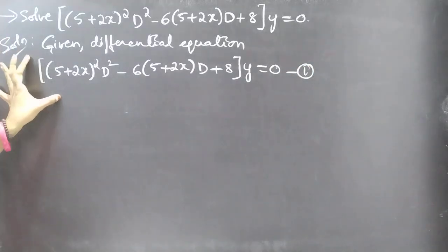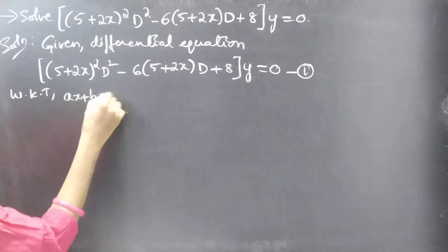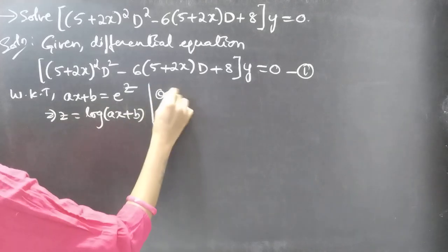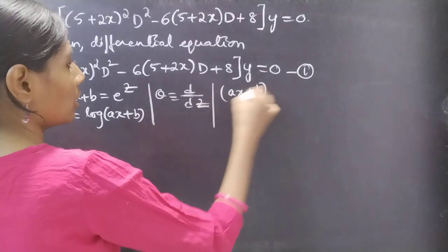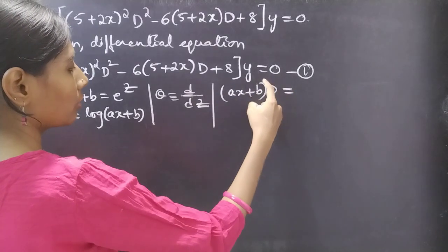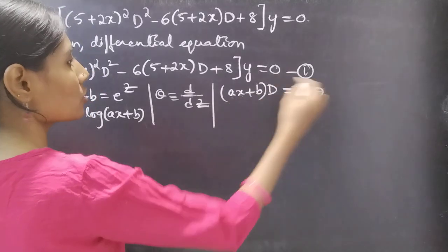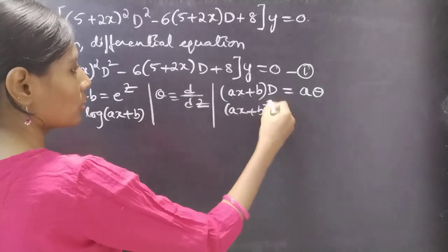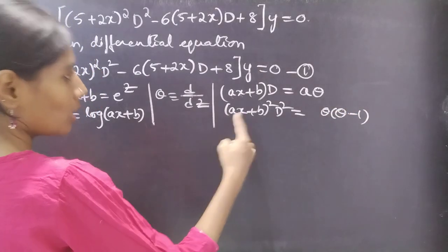We'll solve this equation by reducing it to a linear equation with constant coefficients by making a substitution. From Legendre's method, (ax + b) is replaced by e^z, so z = log(ax + b). θ is the differential operator with independent variable z. (ax + b)·D can be replaced by a·θ, and (ax + b)²·D² can be replaced by a²·θ(θ − 1).